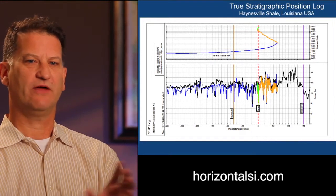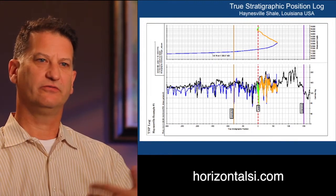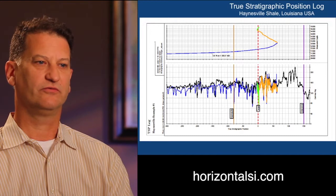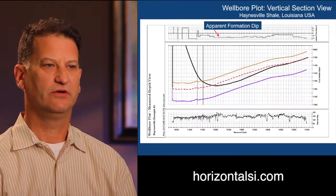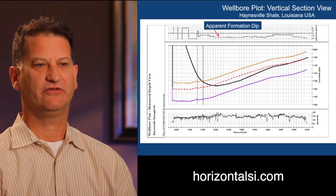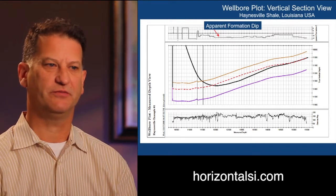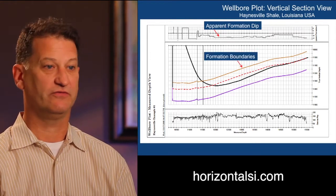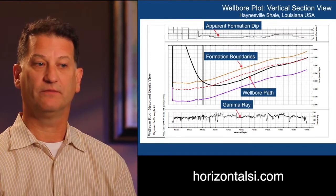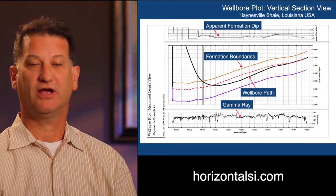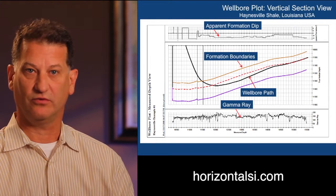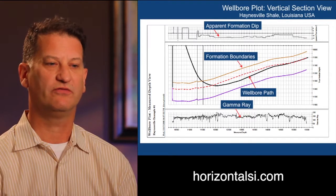Once that stratigraphic relationship is determined, a structural cross-section is drawn. In the structural cross-section, the top track shows apparent formation dip. The middle track shows the formation boundaries and the wellbore. The bottom track shows the gamma ray, the raw gamma ray as it's recorded off of the wellbore.